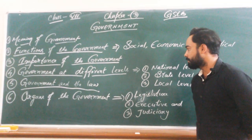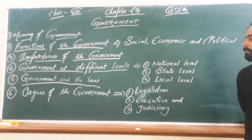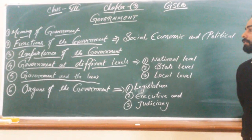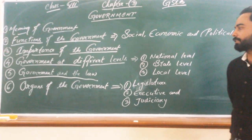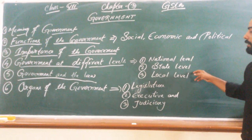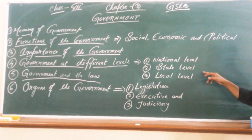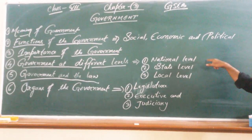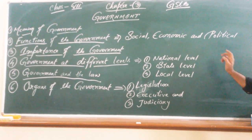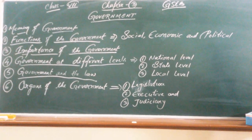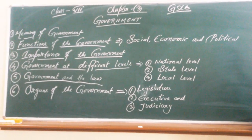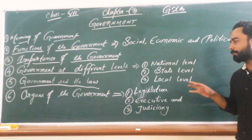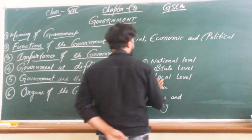The fourth topic is government at different levels. Since India is a vast country, the government functions at three different levels for administrative efficiency and effectiveness: national level, state level, and local level. The national level government deals with the affairs of the whole nation, the state level deals with the matters of a particular state, and the local level deals with matters and problems related to villages, towns, and city areas.